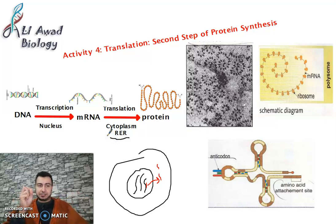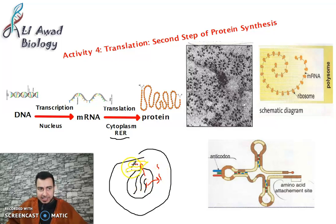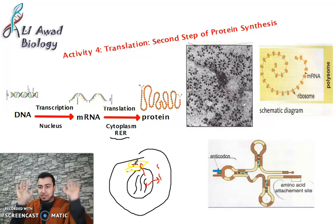So the first idea is that translation occurs inside the cell in a place called the rough endoplasmic reticulum. The mRNA enters the rough endoplasmic reticulum and is translated there into proteins. But for translation to happen, we need materials — tools of translation.